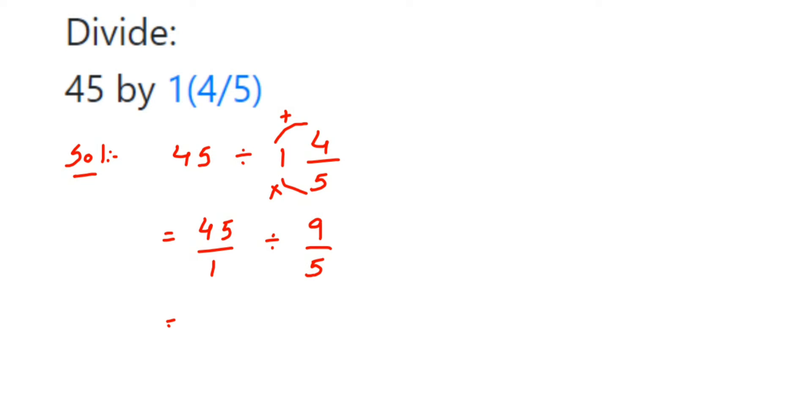Now here you're dividing two fractions. When you're dividing two fractions, the first fraction will remain the same, 45 by 1. Now the division here will become multiplication, and you're going to multiply with the reciprocal of the second fraction. So reciprocal of 9 by 5 will be 5 by 9.